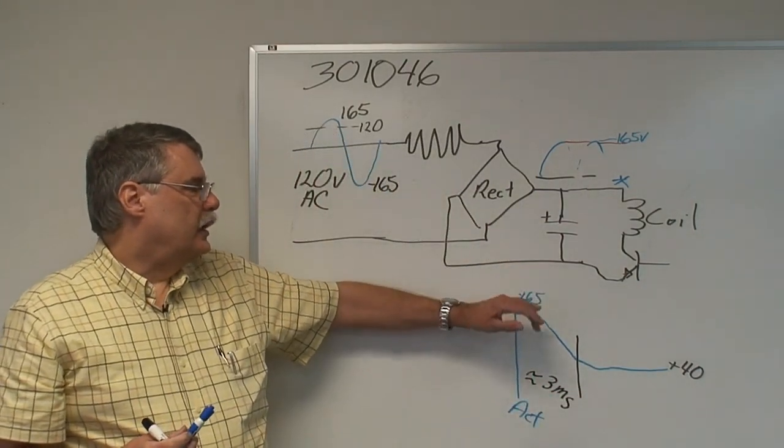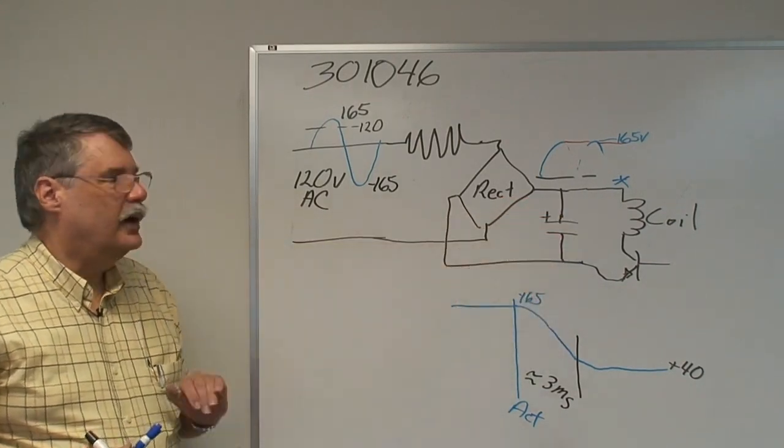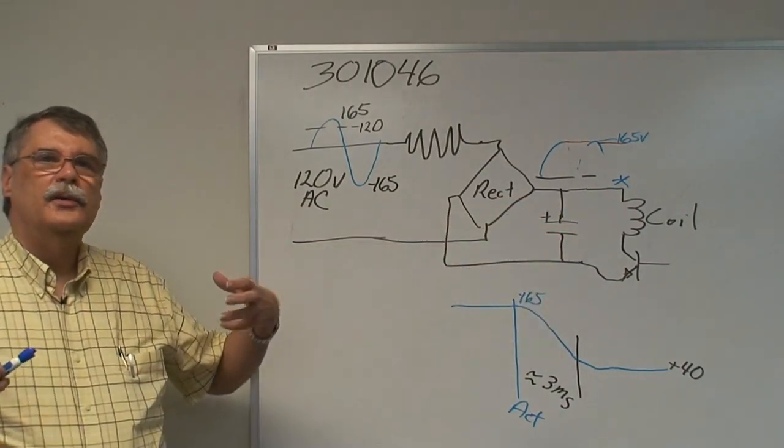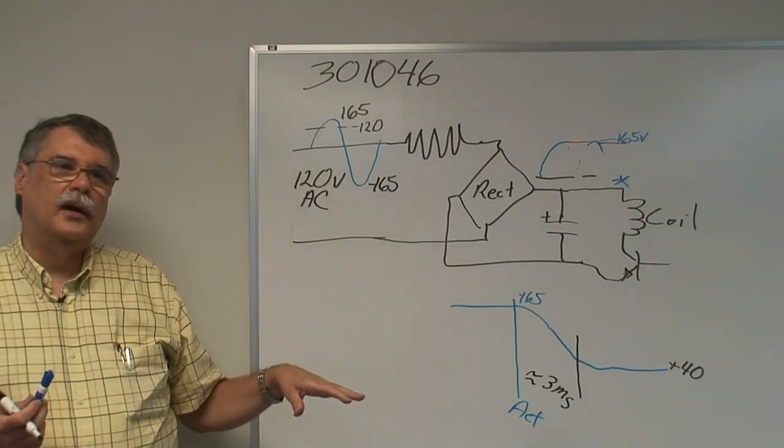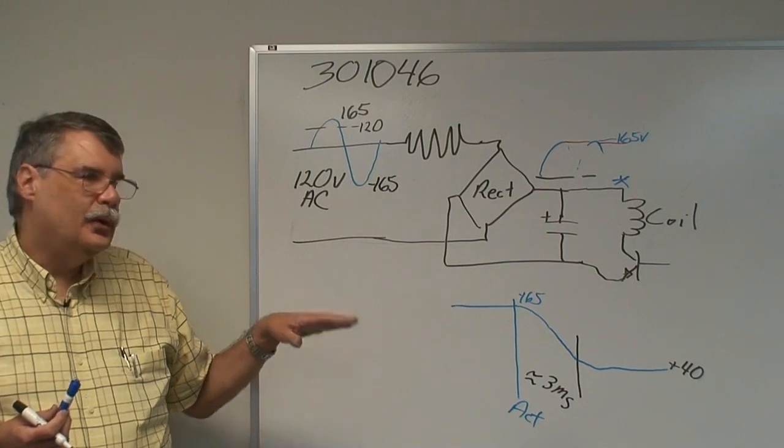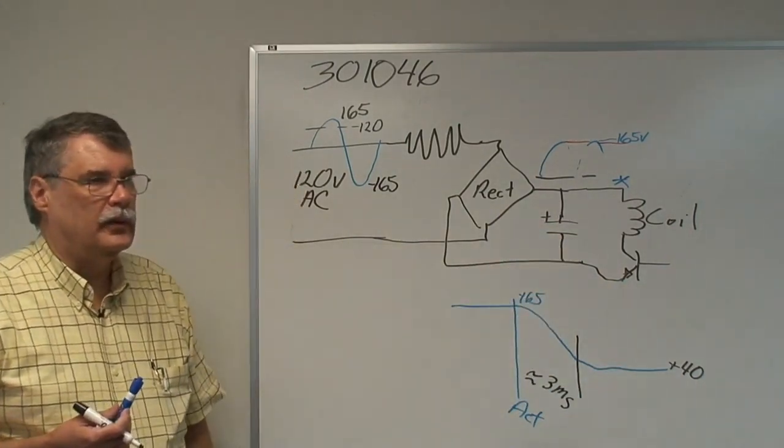So what we're doing is we are hitting this coil with 165 volts really quickly, generating a really strong magnetic field, and then allowing that voltage to drop, which allows the current to drop, and lets the strength of magnetic field drop.